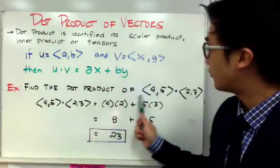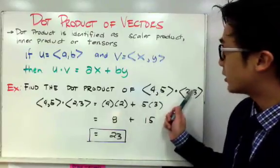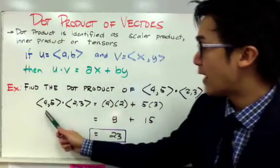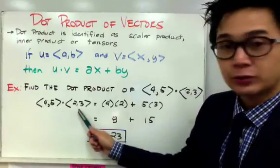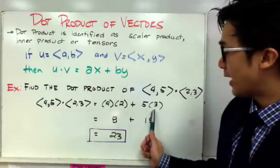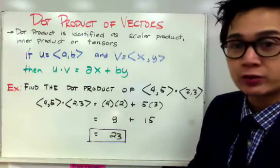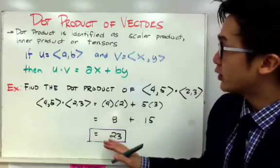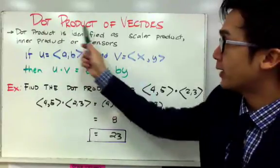In our example, if we have two vectors ⟨4,5⟩ and ⟨2,3⟩, and we need to perform dot product for these two vectors, all we have to do is use this formula. So we have ⟨4,5⟩·⟨2,3⟩ equals (4)(2) plus (5)(3), and you'll have 8 plus 15, which gives you 23. Notice that when you perform dot product on two vectors, your answer will be a scalar or a regular number.